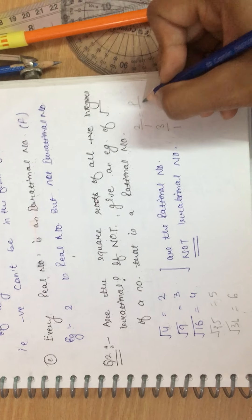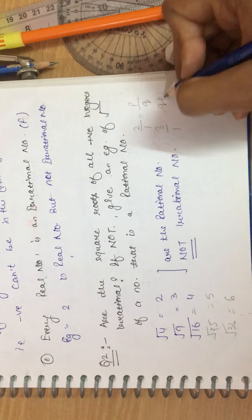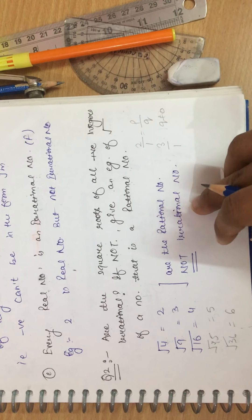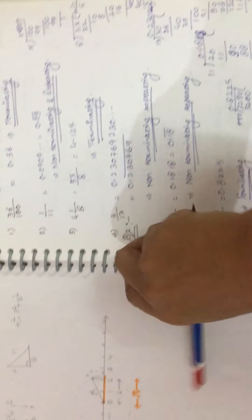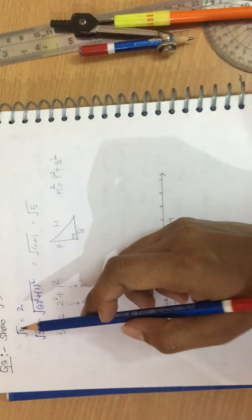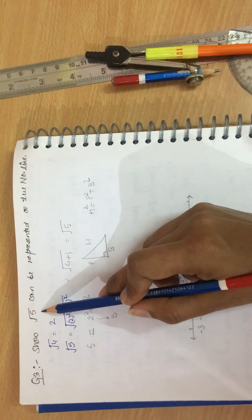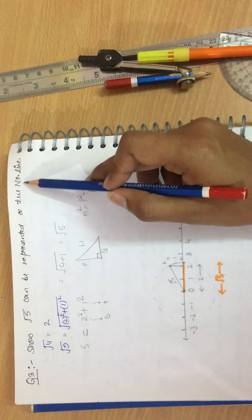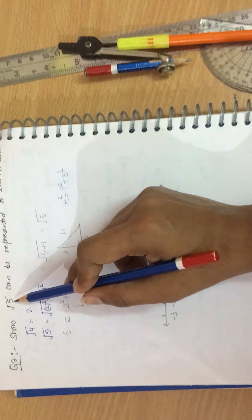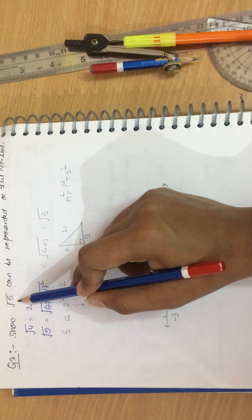Under root 9 is 3 and so on. 2 and 3, these are rational numbers. Because 2 can be written as 2 by 1, 3 can be written as 3 by 1, which is of the form P by Q and Q is not equal to 0.